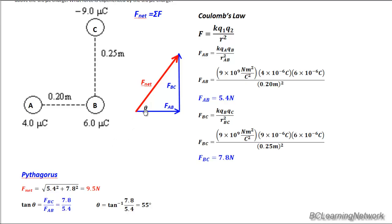And if I label this little angle here theta, tan theta will be opposite over adjacent. So FBC over FAB. So 7.8 over 5.4. And to find an angle, of course, we do tan inverse to get 55 degrees. So we would say that Fnet is 9.5 Newtons at 55 degrees north of east.